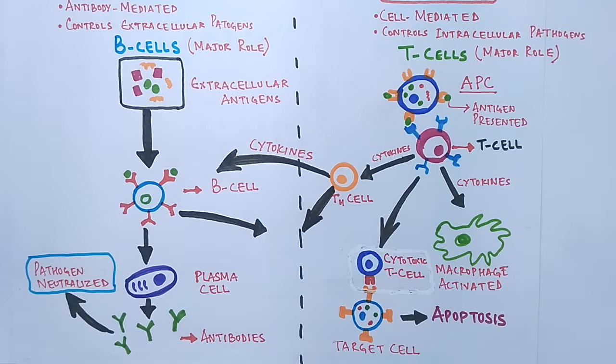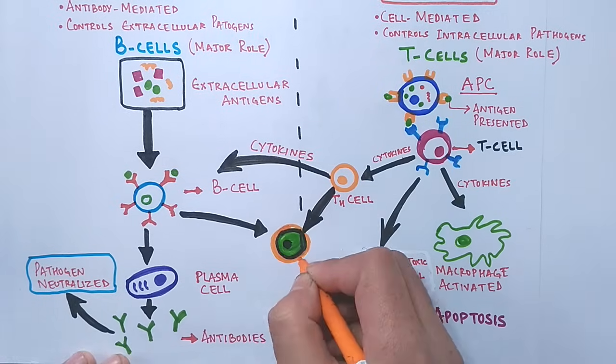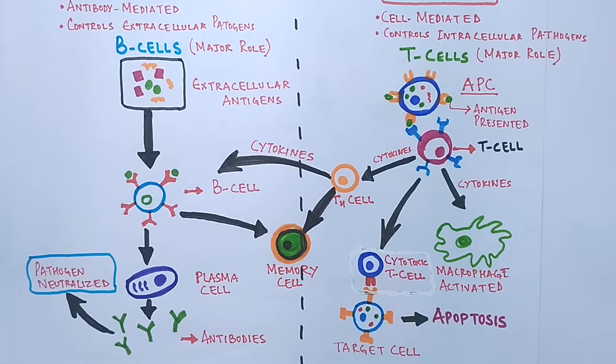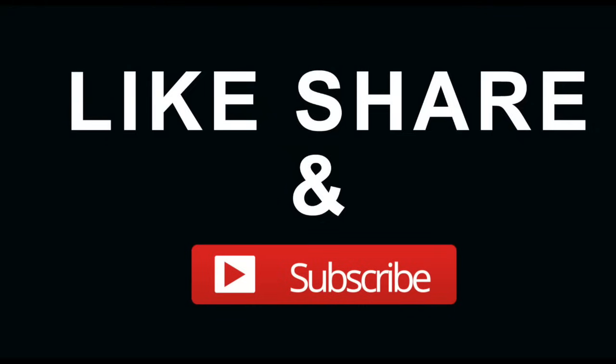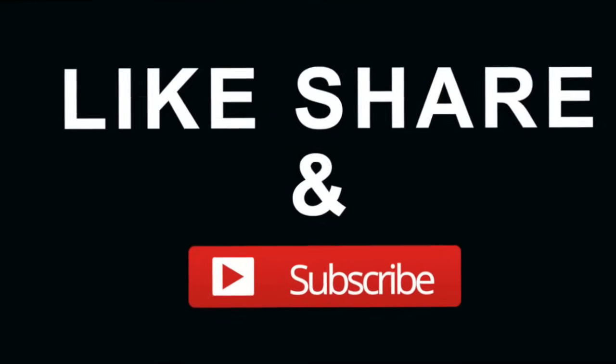Also remember, some T and B-cells differentiate into memory cells that respond rapidly to any secondary encounter with an antigen. This is all about humoral and cellular immunity. I hope you liked the video. If you like it, give it a thumbs up and make sure to subscribe to this channel. Thanks.